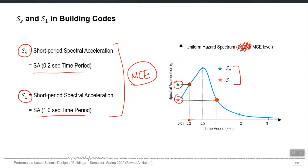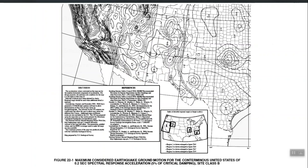If you want to perform response spectrum analysis, you need the whole curve as input as a representation of future loading. If you go for dynamic analysis, you need time histories as the input representation of the future earthquake, but those time histories should be modified such that their spectra match the target spectrum. Our understanding of how we use all these concepts in the design or evaluation of buildings is now almost complete.